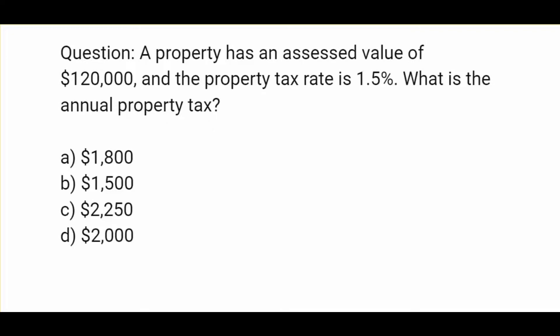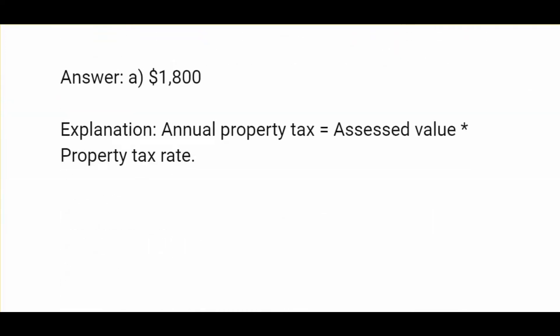A property has an assessed value of $120,000 and the property tax rate is 1.5%. What is the annual property tax? Options are $1,800, $1,500, $2,250, or $2,000. The answer is $1,800. Annual property tax equals assessed value times property tax rate.